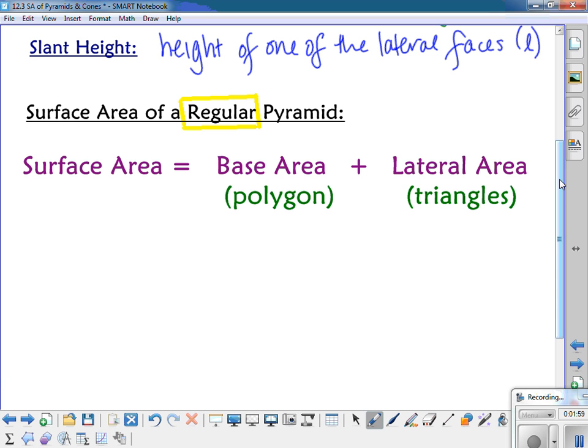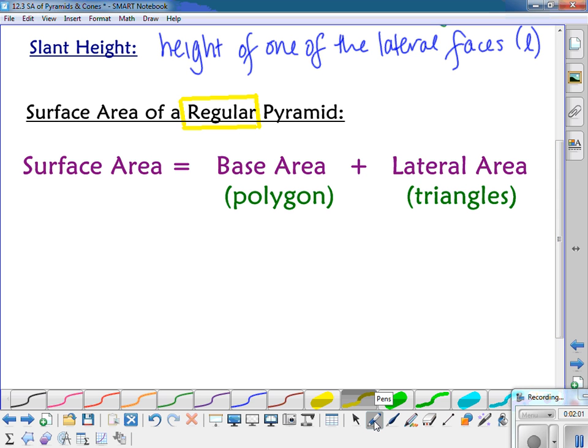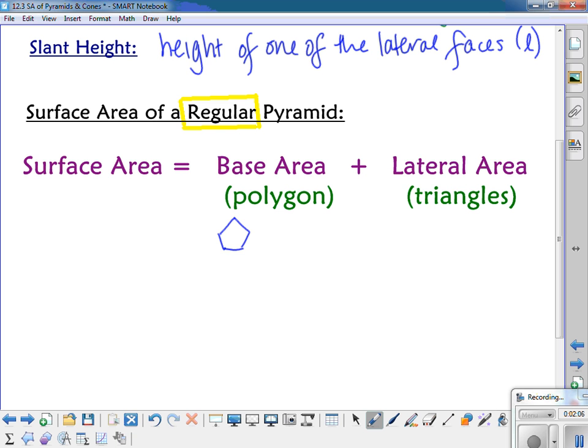And so your polygon, depending on what sort of polygon it is, for instance if it's more than four sides, say it's a pentagon or an octagon or any of those sort of polygons, you can use one-half times the base times height for each triangle times the number of sides, or if you use one-half ba you can use that. If it's a square, it's just going to be the side squared. And if the base is a triangle, it would be one-half base times height.